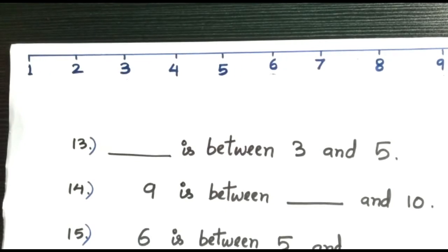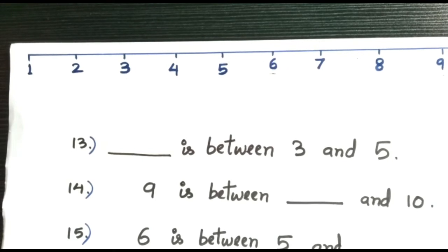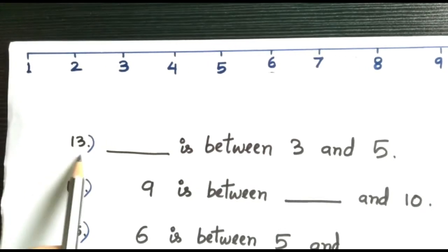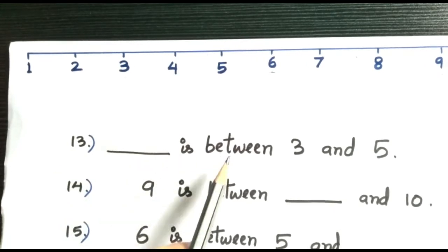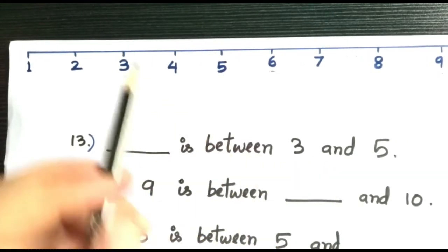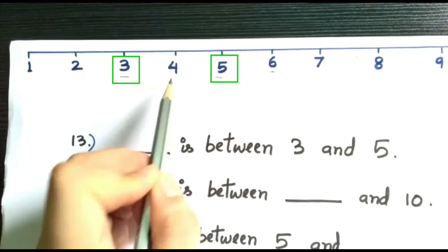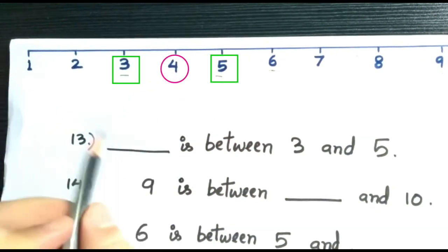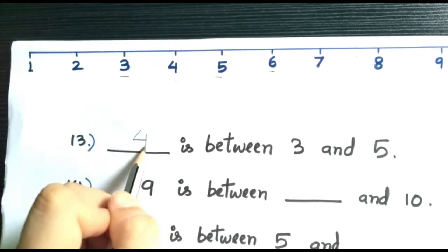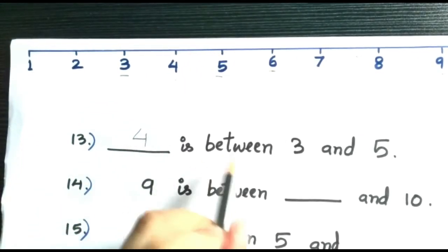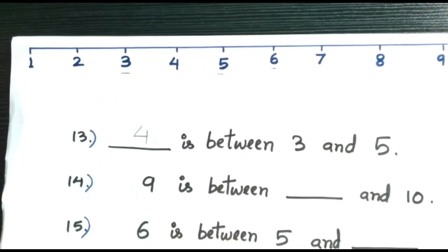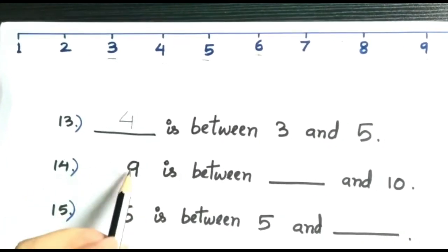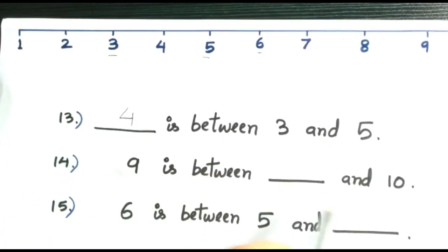Now children, let's do between numbers. Between means beech wali number or middle number. Alright, now question thirteen: dash is between three and five. Three and five ki beech me kya hai, konsa number? We have number four, so we'll write here four. Four is between three and five.